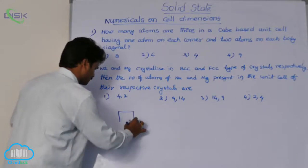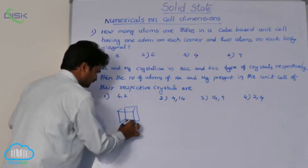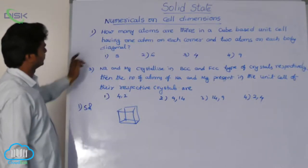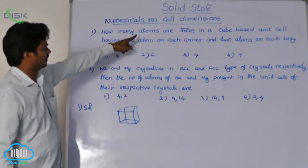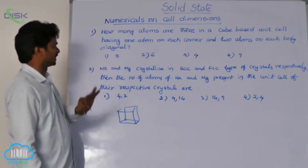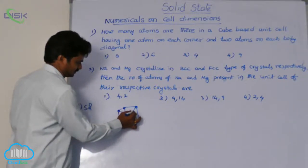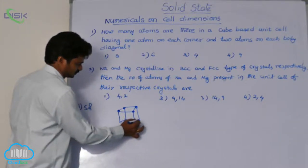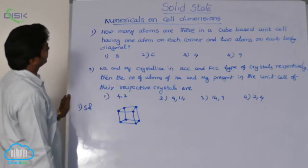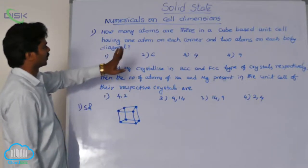Let us draw a cube. Here, where the atoms are present — check the question. The cube-based unit cell has one atom at each corner, so at each corner, one atom. And along each body diagonal, two atoms.